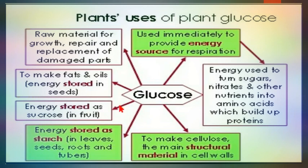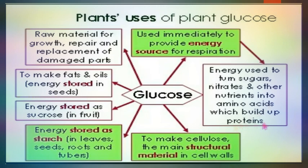If glucose is stored in fruits, it will be in the form of sucrose. If stored in leaves, seeds, roots, and tubers, it will be in the form of starch. Glucose is also used to make cellulose, which is the main structural material of the cell wall. Energy from glucose is also used to turn sugars, nitrates, and other nutrients into amino acids, which build proteins.